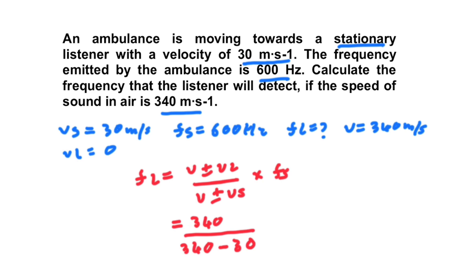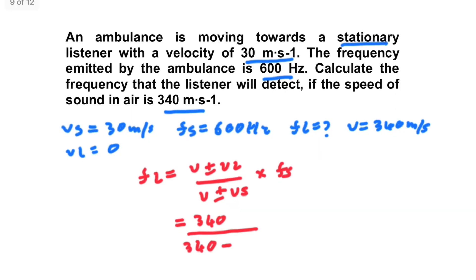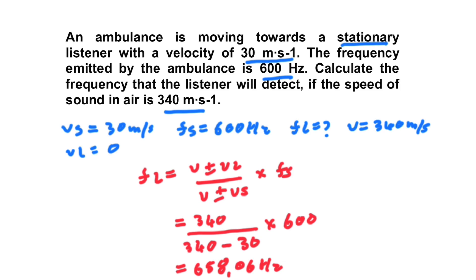We can see in our first scenario that if we have a source moving towards the stationary listener, we have minus VS on the denominator. So FL = 340 / (340 − 30) × 600 = 340 / 310 × 600. Putting that into the calculator, the frequency observed by the listener is 658.06 Hz — that is the frequency observed when the ambulance is moving towards the stationary listener at 30 meters per second.